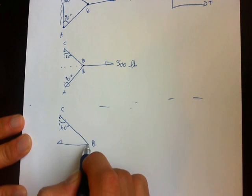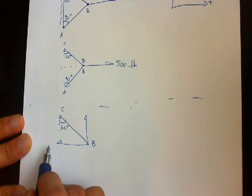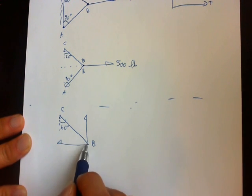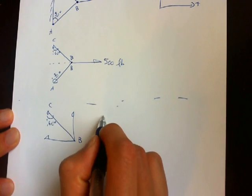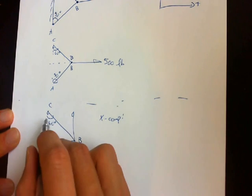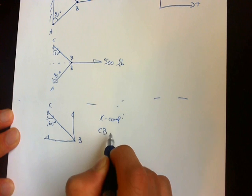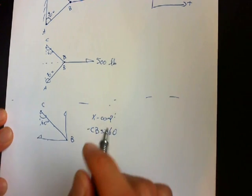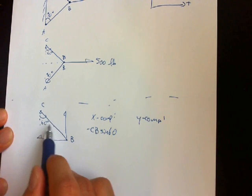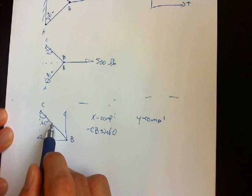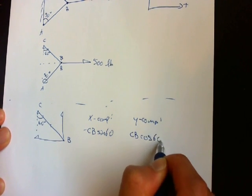Here's the X component and Y component. The X component is negative because it's going to the left. The Y is positive because it's going up. The X component is opposite over hypotenuse, so it's CB cosine 60. The Y component is adjacent over hypotenuse, so it's CB cosine 60.